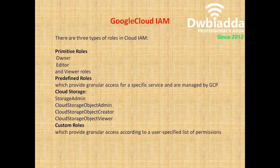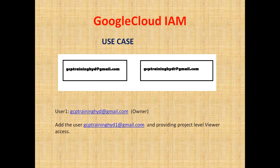Now I will move to the next slide, which is a use case. I have two accounts. One is gcptraininghyderabad at gmail.com. I am logging in with gcptraininghyderabad at gmail.com as an owner, and I want to add another user — gcptraininghyder1 at gmail.com — and provide project-level viewer access. Let's see how we can implement this use case.